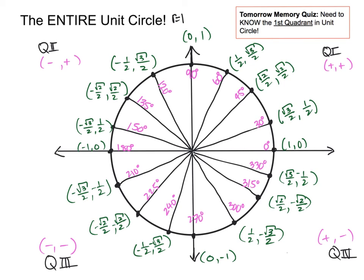For tomorrow's memory quiz — the first memory quiz — you are just asked to memorize the first quadrant. Next week you will have to memorize all of the coordinates and the angles for the entire unit circle. That's it for this journal.